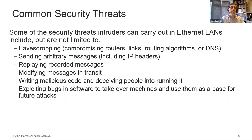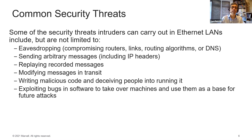Common security threats. Some of the security threats intruders can carry out in an Ethernet LAN include, but are not limited to: eavesdropping, compromising router links, routing algorithm or DNS, sending arbitrary messages including IP headers, replaying recorded messages, modifying messages in transit, writing malicious code and deceiving people into running it, and exploiting bugs in software to take over machines and use them as a basis for future attacks.